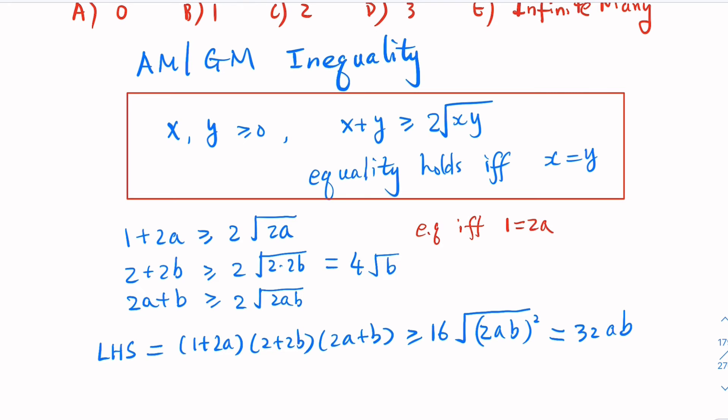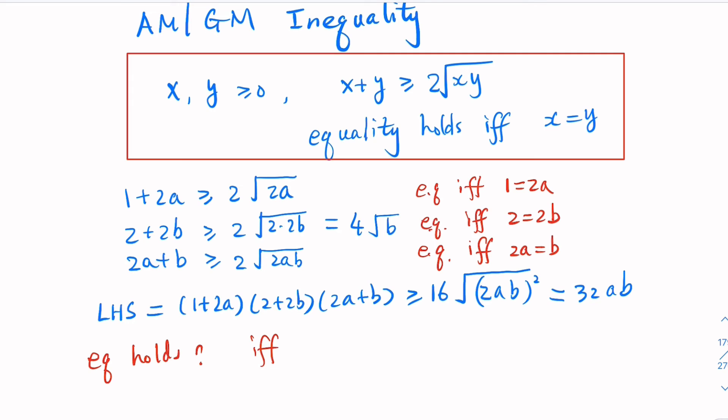For the second inequality, 2 = 2B, so B = 1. For the third inequality, 2A = B. So the conditions are: A = 1/2 from the first, B = 1 from the second, and 2A = B from the third. We notice that 2A = 2(1/2) = 1, which indeed equals B. So A = 1/2, B = 1. It's the only solution.